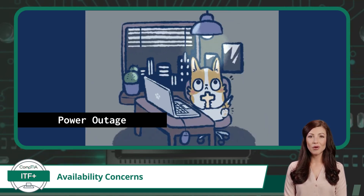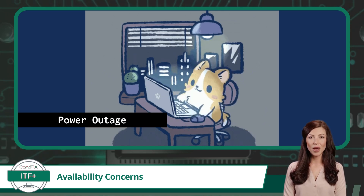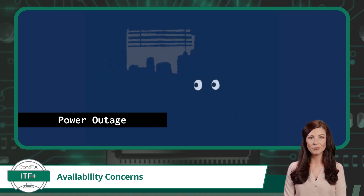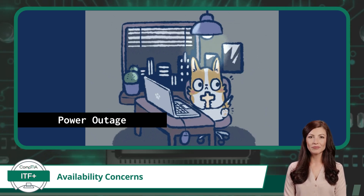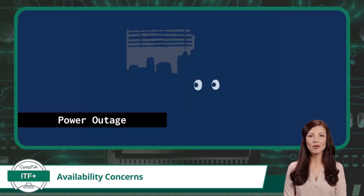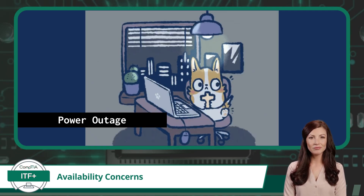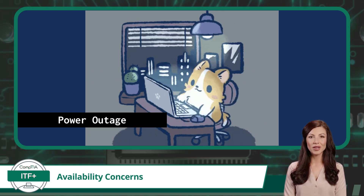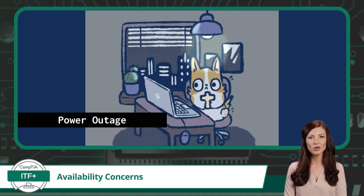To start off, we will begin with the threat of a power outage. A power outage is one of the most immediate and palpable threats to availability. Whether due to natural causes like storms or technical issues within power grids, the sudden loss of electricity can halt operations instantaneously. Without power, most modern equipment, from servers to workstations, can become inoperative, leading to potential data loss and operational downtime.